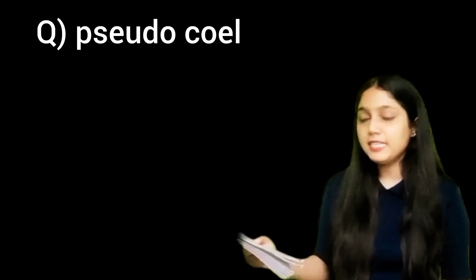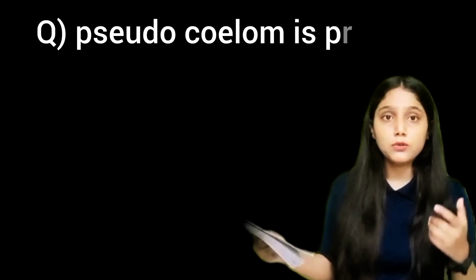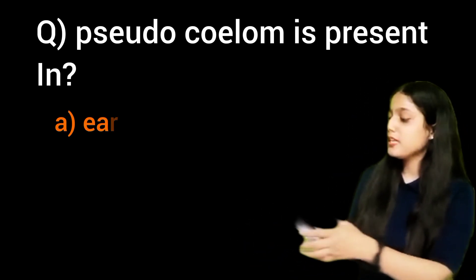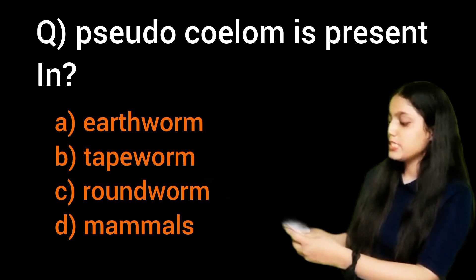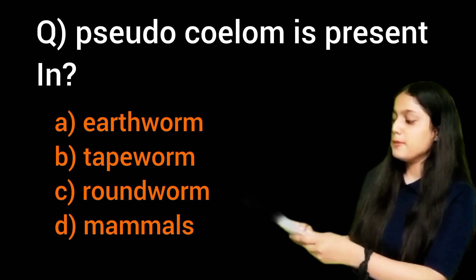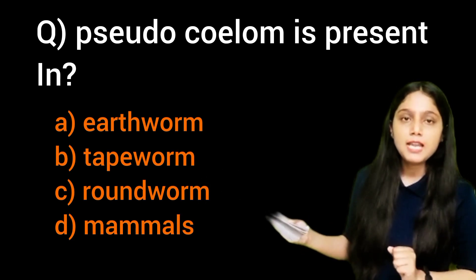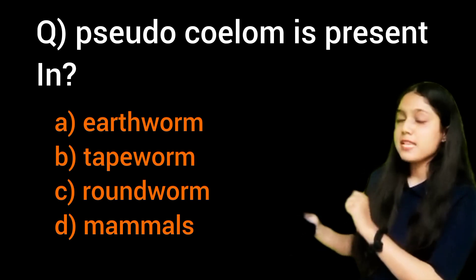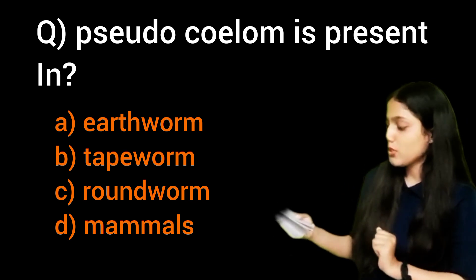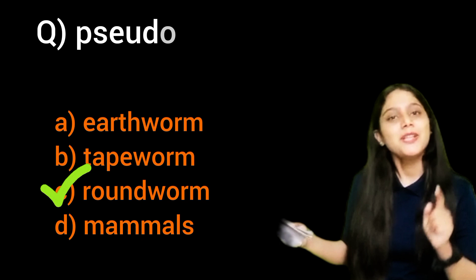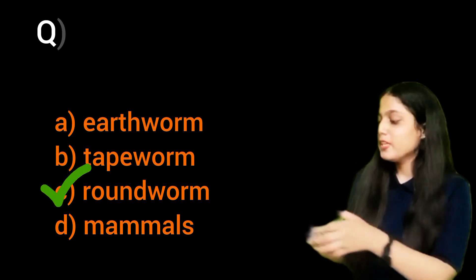The next question is: pseudocoelom is present in which organism? The options are: earthworm, stakeworm, roundworm, and mammals. What is the example of phylum Aschelminthes? The answer is roundworm — that is the correct answer.